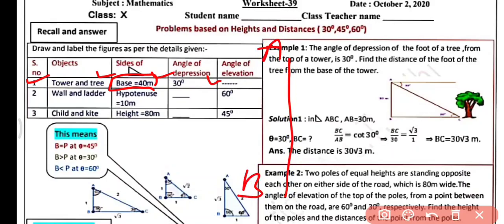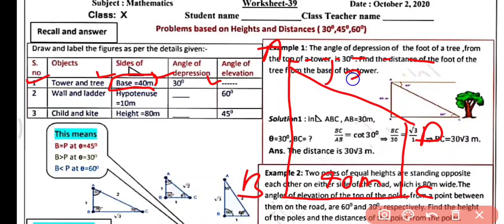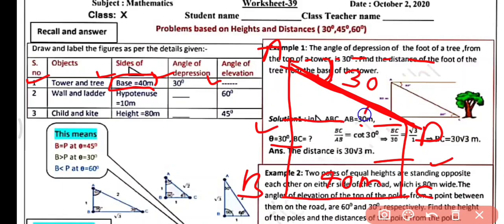The tower is AB and the base BC is 40 meters. The tree CD is of a certain height. The angle of depression from the top of the tower to the top of the tree is 30°. Since AB and CD both stand on the ground and are parallel, AD acts as a transversal, making alternate interior angles equal. So the angle of elevation will also be 30°.